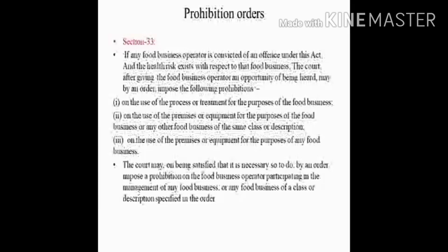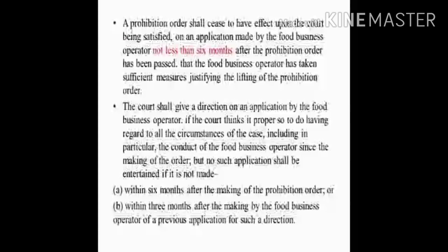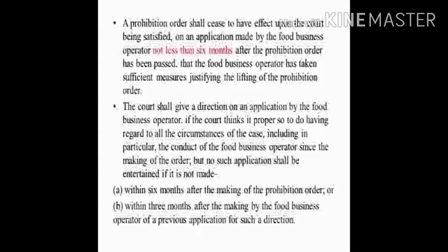Under section 34, the court can also impose a prohibition on the food business operator participating in the management of any food business or any food business of a class or description specified in the order. The food business operator can apply to cease the prohibition order not less than six months after the prohibition order has been passed. The court will not entertain any application if it is not made within six months after making the prohibition order, or within three months after a previous application by the food business operator for such a direction.